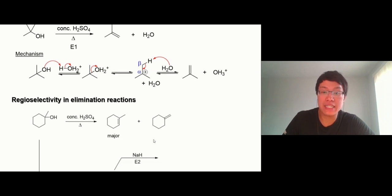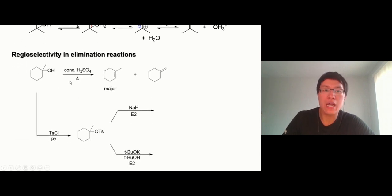You can control the regioselectivity using different bases. In this reaction, because of carbocation stability, you'll get the Zaitsev product as the major product.